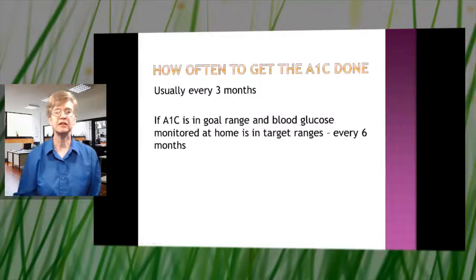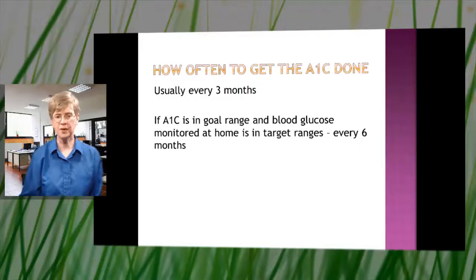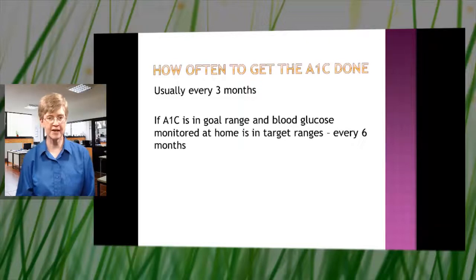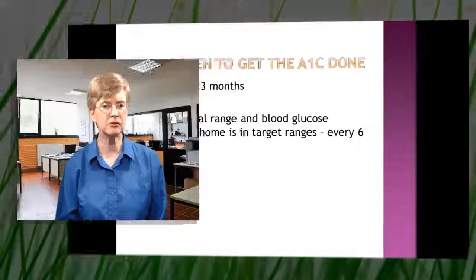Usually you get the A1C done every three months. If your A1C is in goal range and your blood glucose that you're monitoring at home is in your target ranges, the doctor might tell you to get your A1C checked every six months.